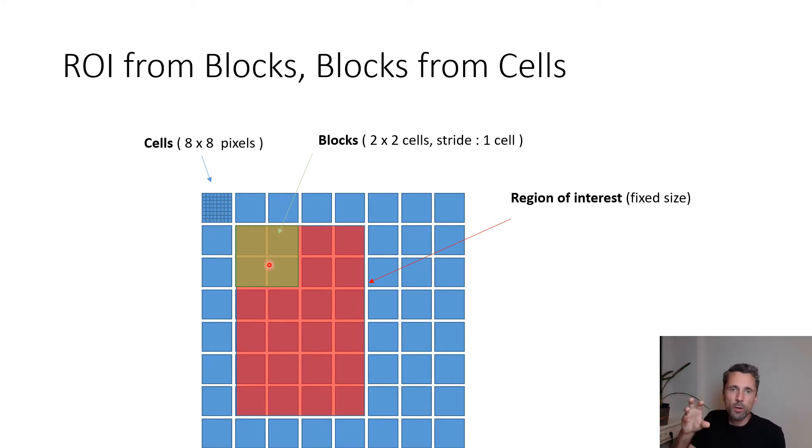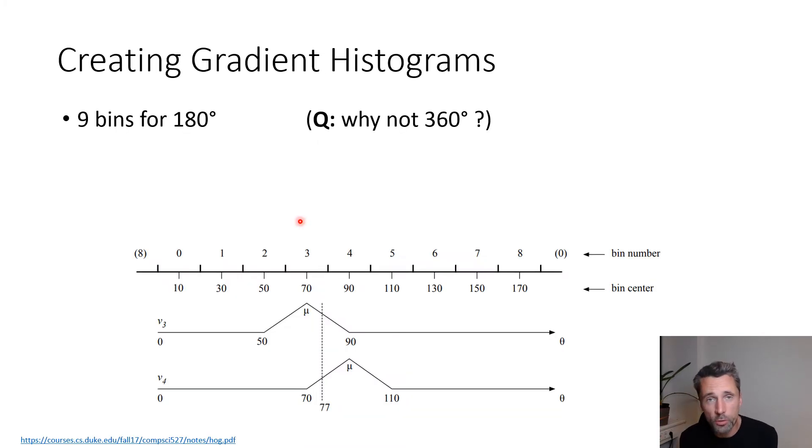We'll concatenate those block descriptors for overlapping blocks within the region of interest. For example, the next block would be shifted one cell to the right.